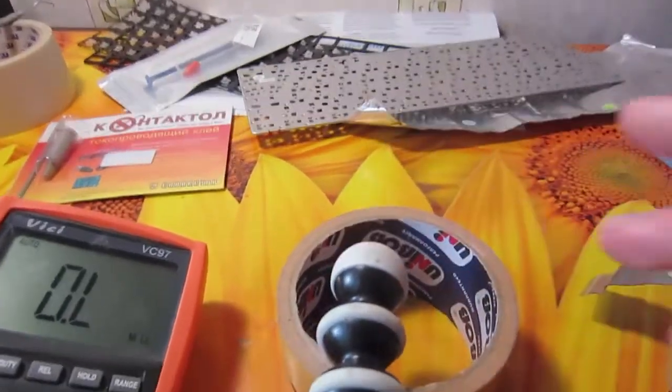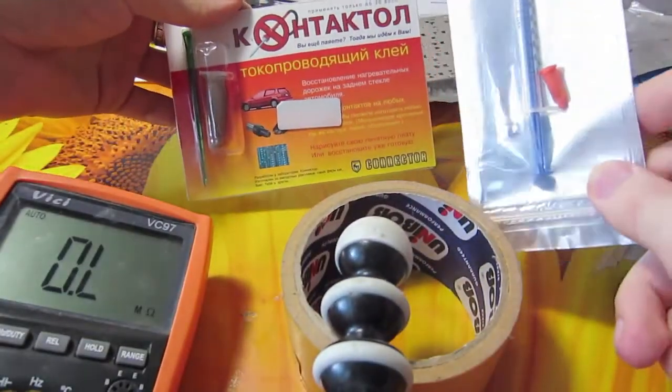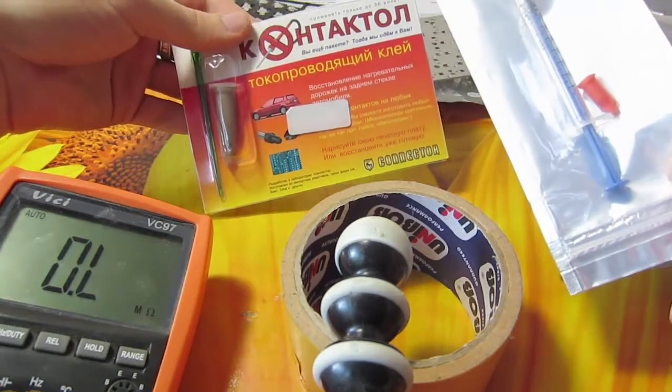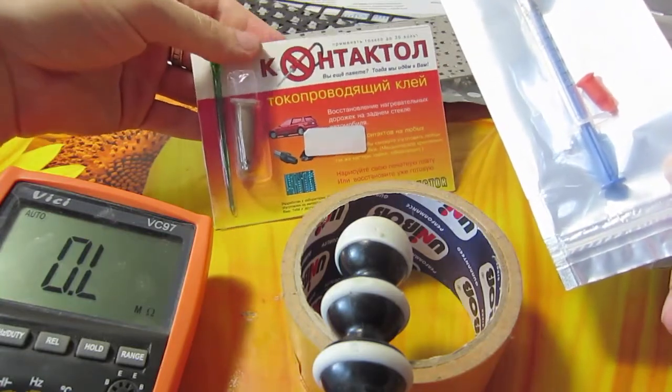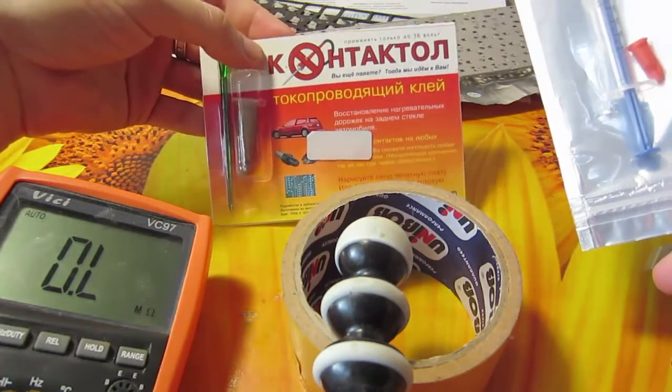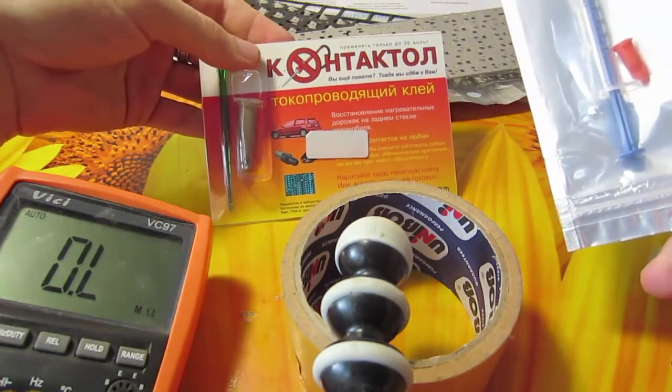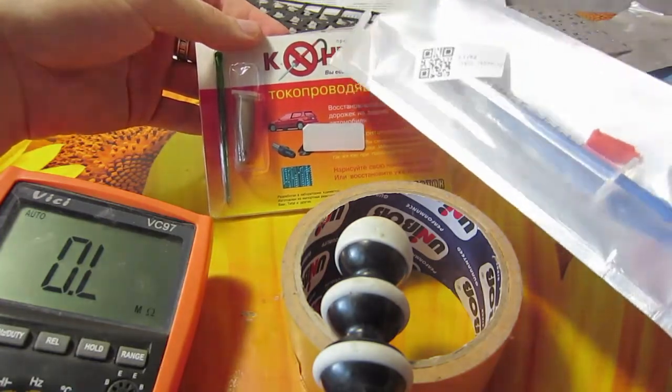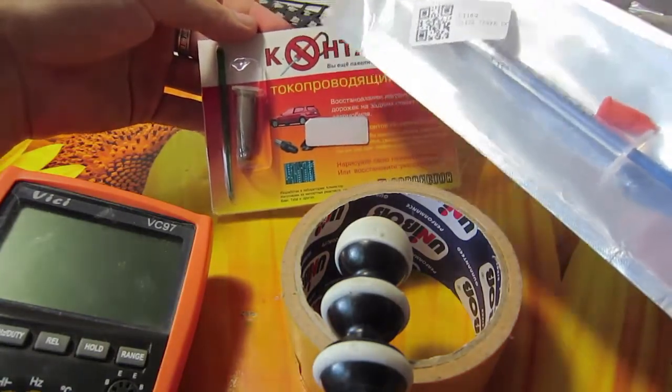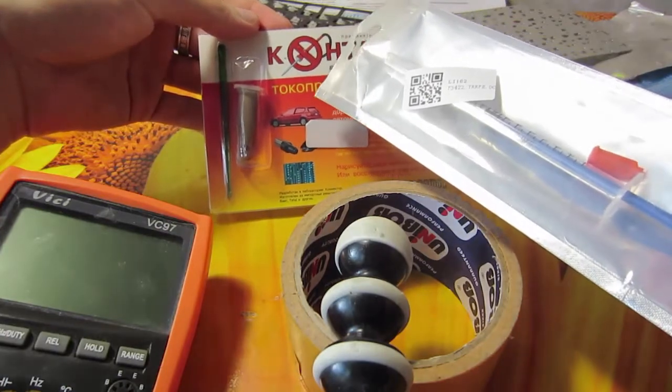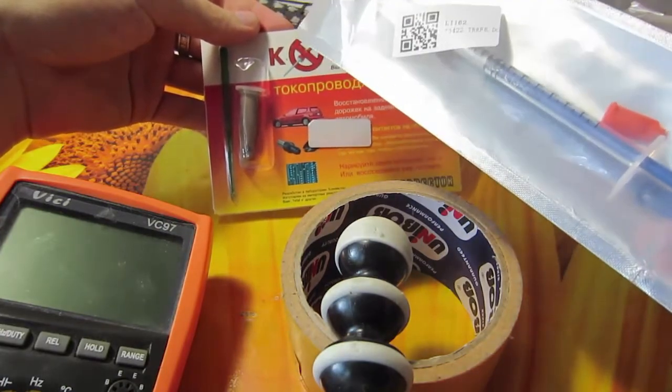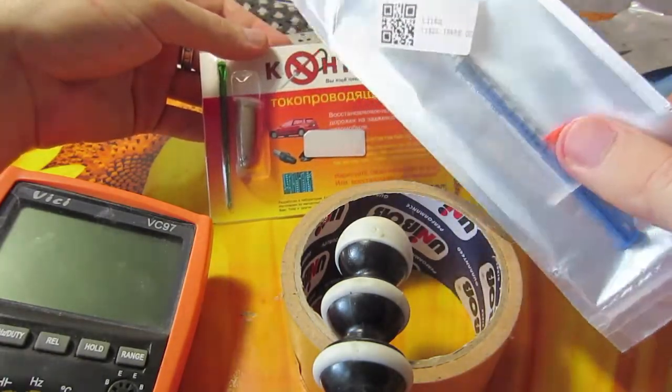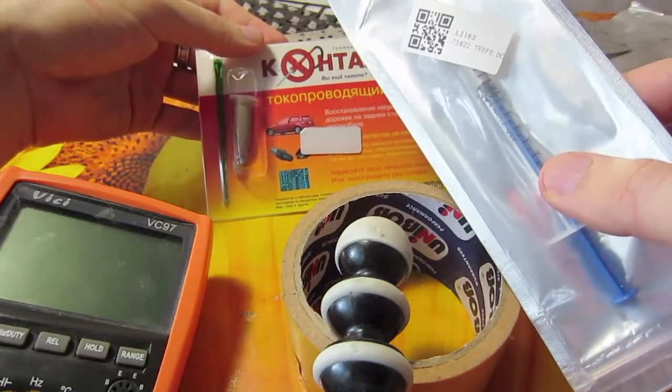Also, what can I say? In this case, in the battle of China versus Russia, China wins. Because as you remember from the previous videos, I used Russian conductive glue Contact Oil to restore keyboard rods, and it took two layers. It took two layers of this glue to bring all resistance values to the needed state. But here, in this case, with Chinese unknown random stuff, it works better.